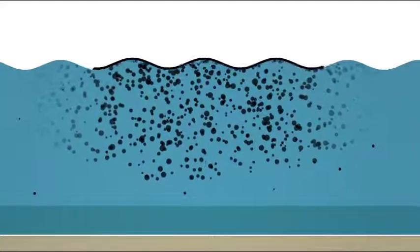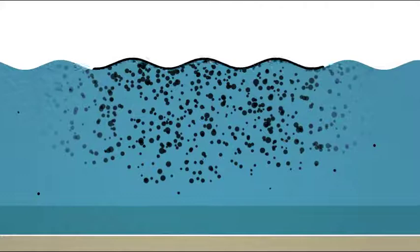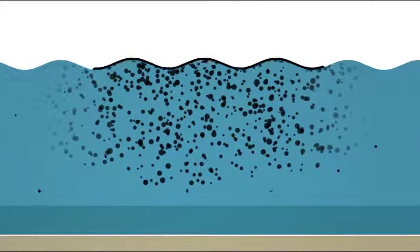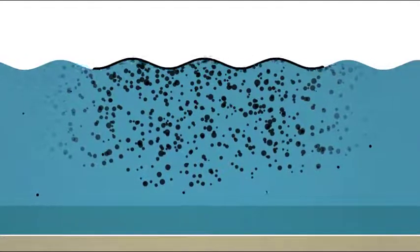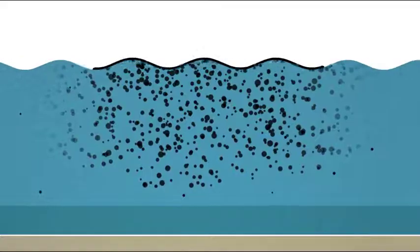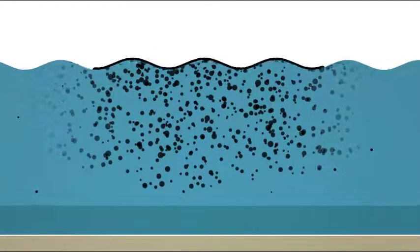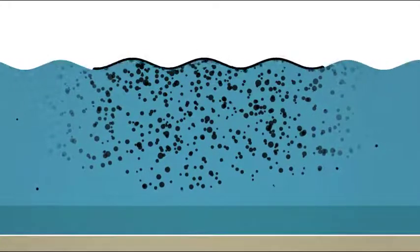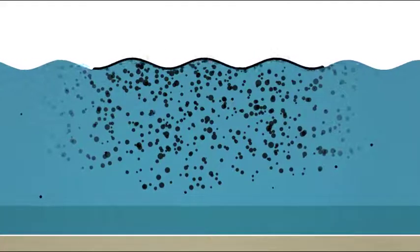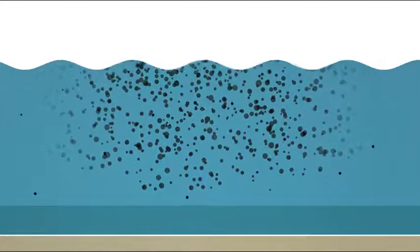These chemically dispersed oil droplets do not coalesce or resurface following their initial dispersion. Within minutes to hours, local mixing and turbulence reduce the concentration of dispersed oil droplets in the water column until it is diluted below concentrations of environmental concern.